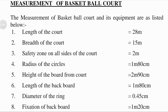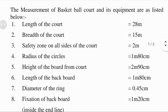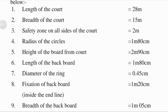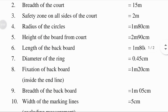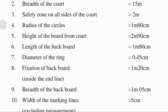Length of the court: length means a measure of distance; the court length is 28 meters. Breadth of the court: breadth means measurement from side to side of something, that is width; the court breadth is 15 meters. Safety zone on all sides of the court means in every direction around the marked-out playing area; that is 2 meters.